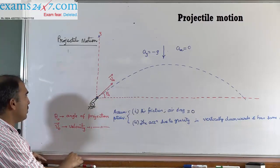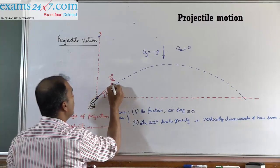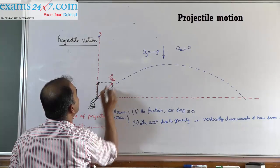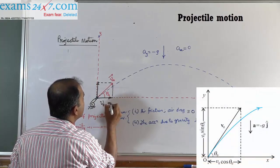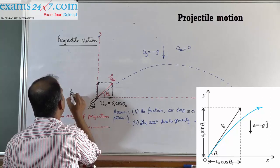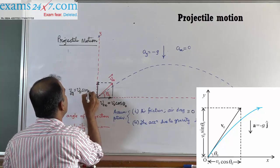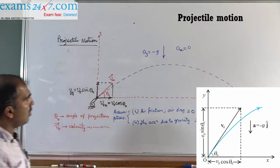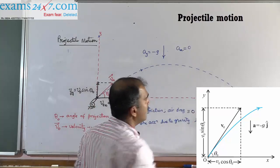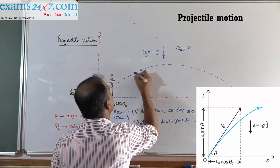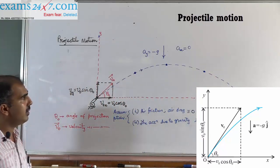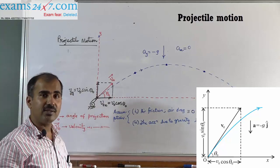The initial velocity vector has two components. Resolving it, one component is along the horizontal direction and another is along the vertical direction. The horizontal component we call V0x, which is V0 cos theta naught, and the y component V0y is V0 sin theta naught. As the projectile climbs along its path, it passes through different points. We have already stated that the direction of velocity is always along the tangent to the path.